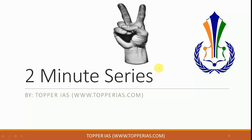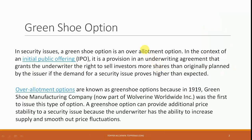Hello and welcome to the two-minute series. The topic for today is the green shoe option. This is a simple term but it is often confused because the name is not very clear. In simple terms, a green shoe option is an over-allotment option.